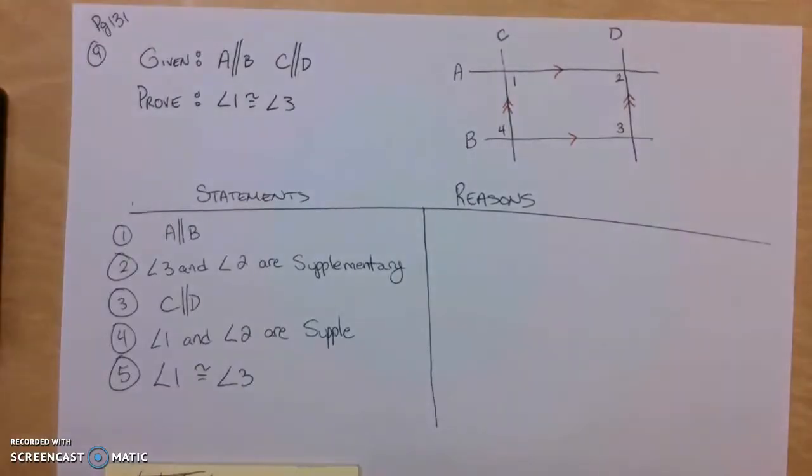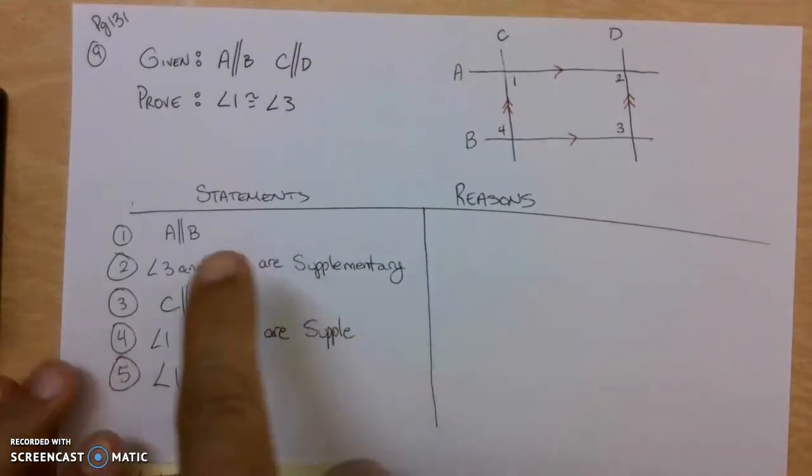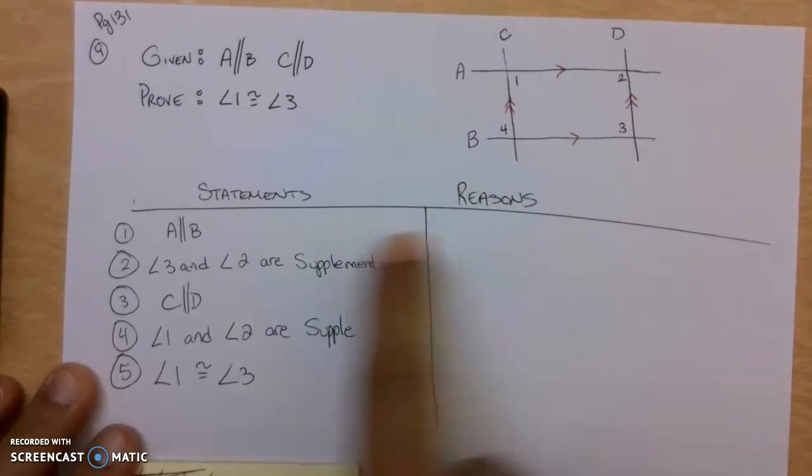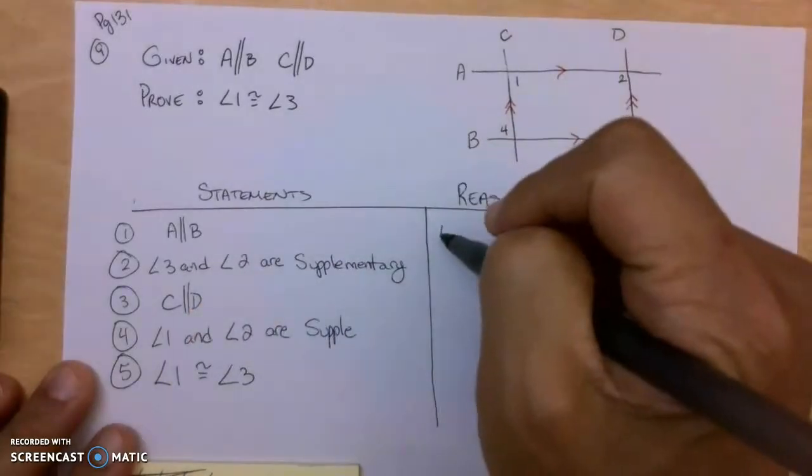Alright, we're going to go over a few problems here on page 131. We're going to start with number 9, a two-column proof. So I need you guys to have both columns here. I know this looks like the only part you need to fill out, but you've got to get in that habit of having both columns.